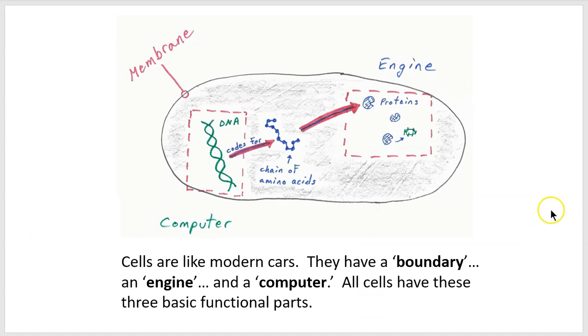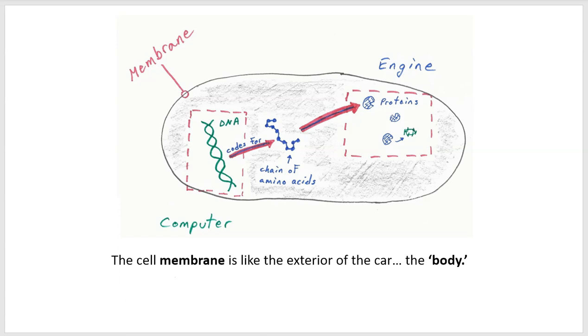Now let's introduce an analogy. Cells are like modern cars. They have a boundary, an engine, and a computer. And all cells have these three basic functional parts. So let's first take a look at the body. Well, the cell membrane is kind of like the body of the car.